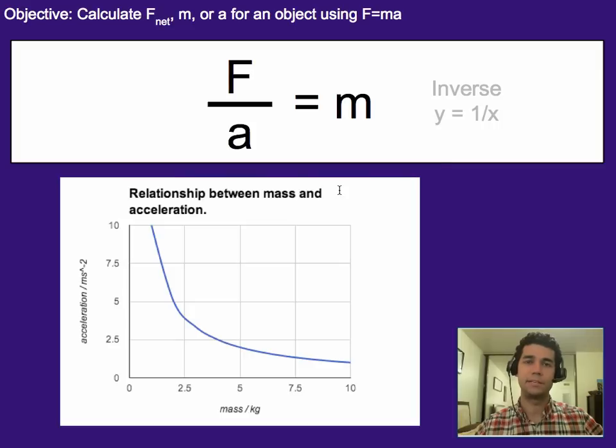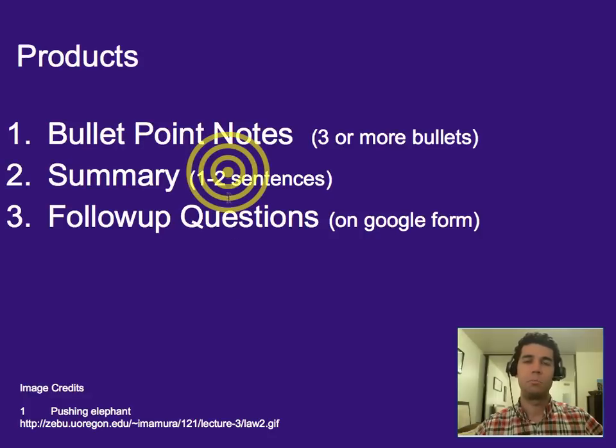So what that ends up looking like is this inverse graph right here. That's it. Three or more bullet points worth of notes, a one to two-sentence summary, and your follow-up questions on Google Forms. Thank you.